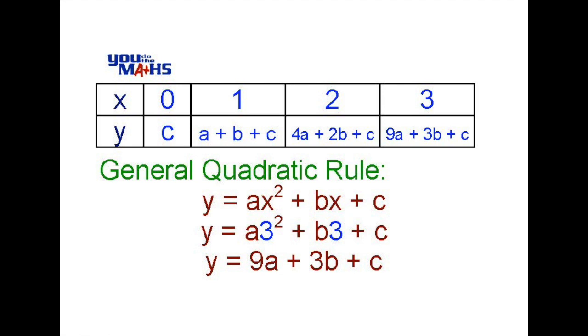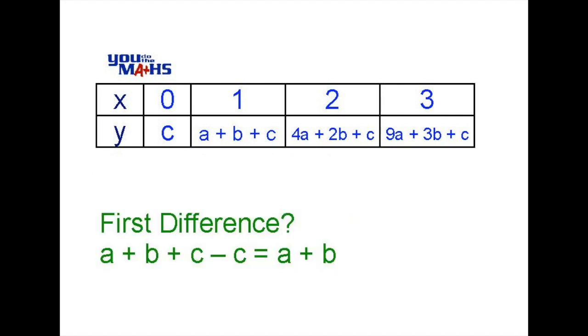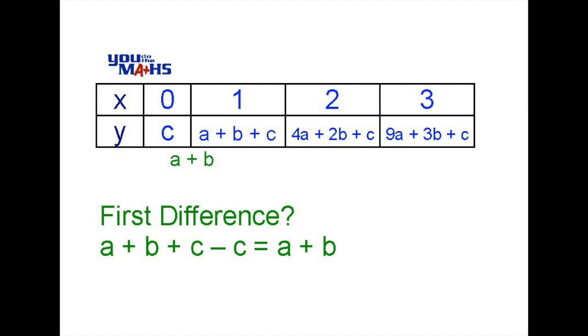To work out the first difference in these algebraic expressions we go a plus b plus c minus c. In other words we are working out the differences when x is 0 and x is 1 and that gives us a plus b. The c's are eliminated.